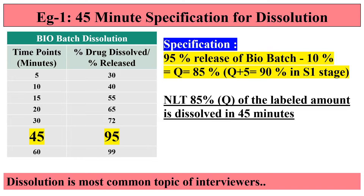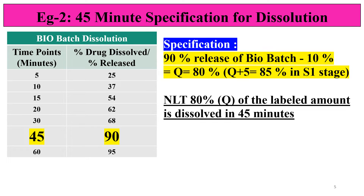Note that we covered 15-minute and 30-minute time points in Part 1, and here the same approach applies. At 45 minutes, if we are getting 95% drug dissolved or drug released, we can give a Q value of 85% in a similar way. So S1 will be 90% and the S2 stage will be 85%, giving a Q value of 85%.